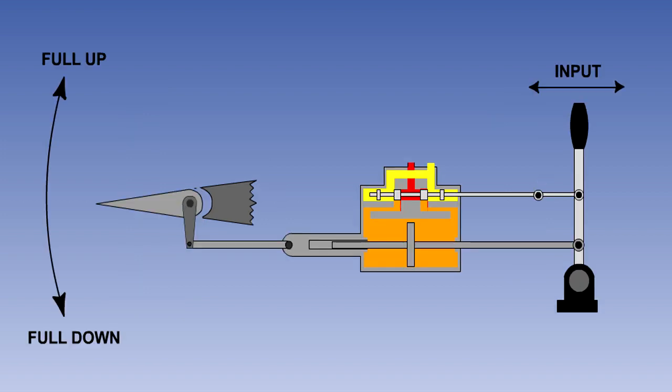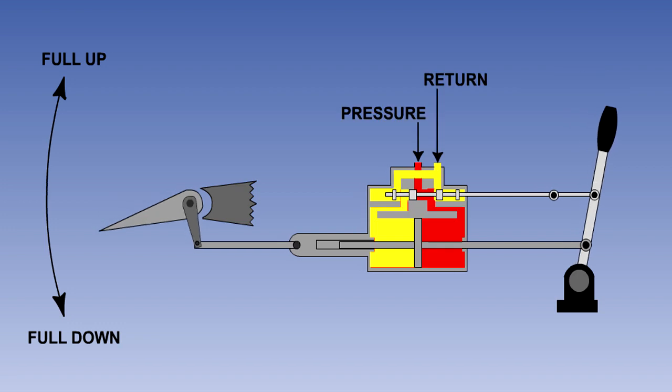We will now look at the operation of the system with hydraulic power available. Once again, when the pilot operates his control, the hydraulic lock will cause the actuator body to move, and with it, the flying control.